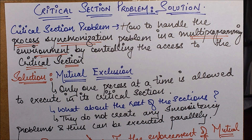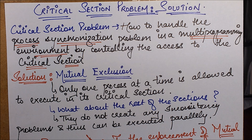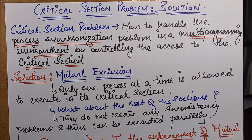The critical section problem is how to handle the process synchronization problem in a multiprogramming environment by controlling the access to the critical section, and its solution is mutual exclusion. The problem was that various threads or processes executing parallelly had a problem in executing some common portion of code together. A possible solution is putting a constraint that that particular common portion of code will be executed by each and every process only one at a time. That is what mutual exclusion is.